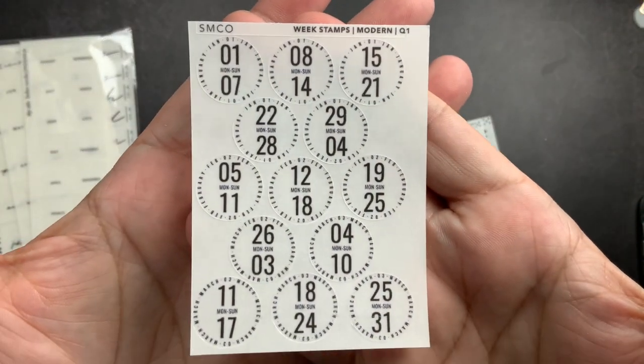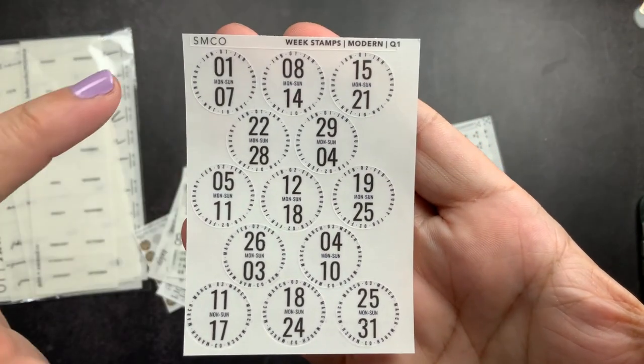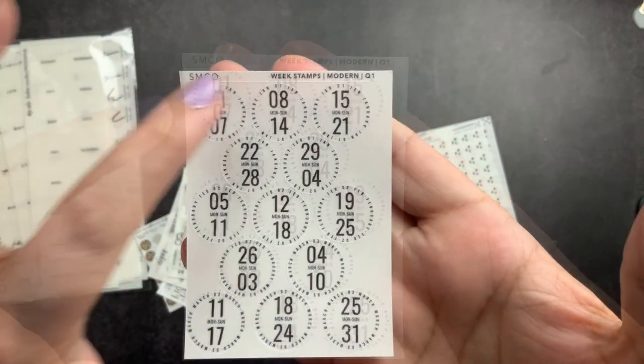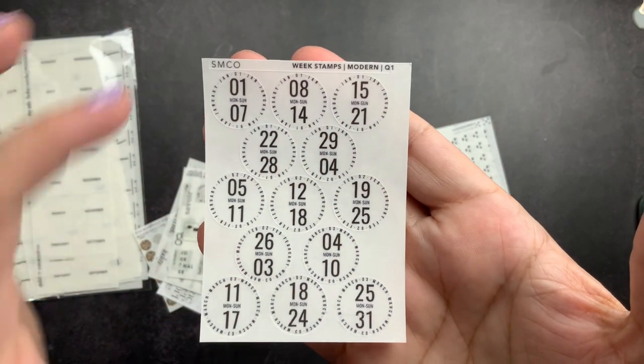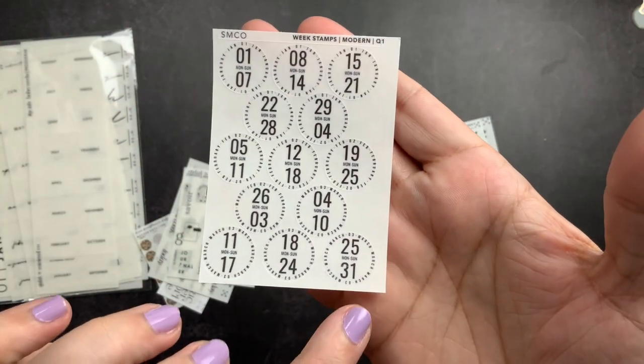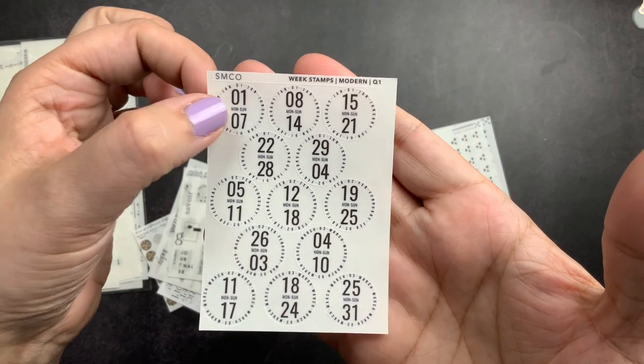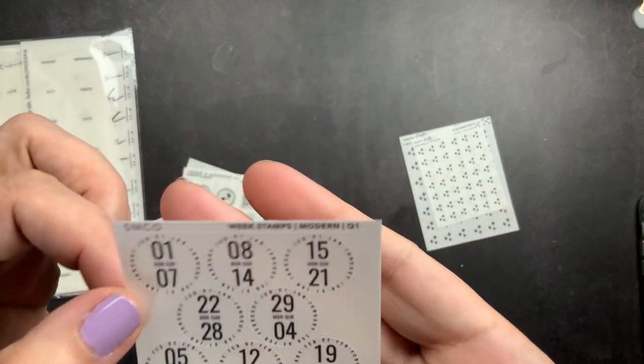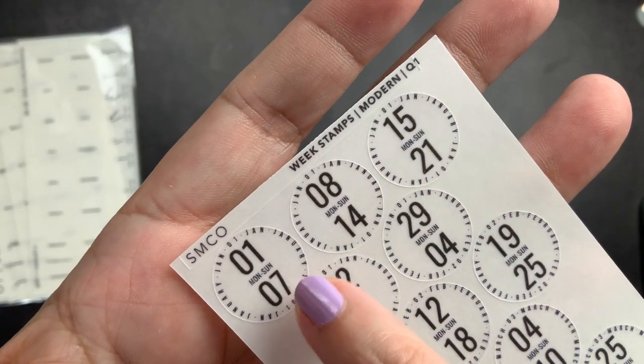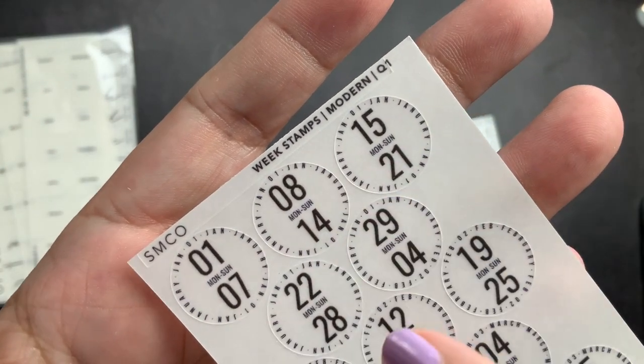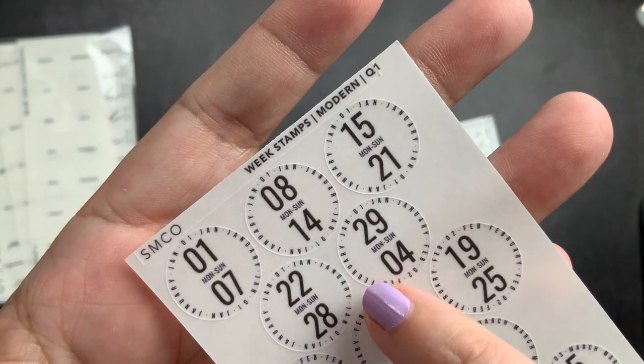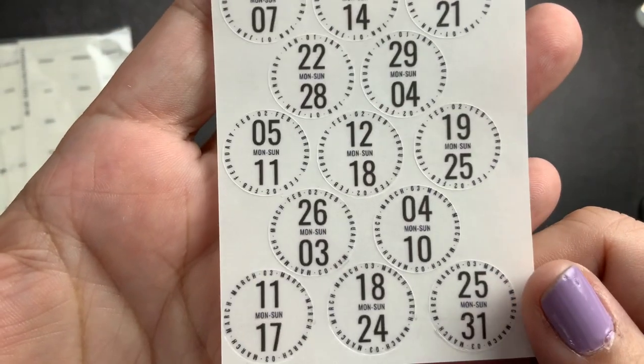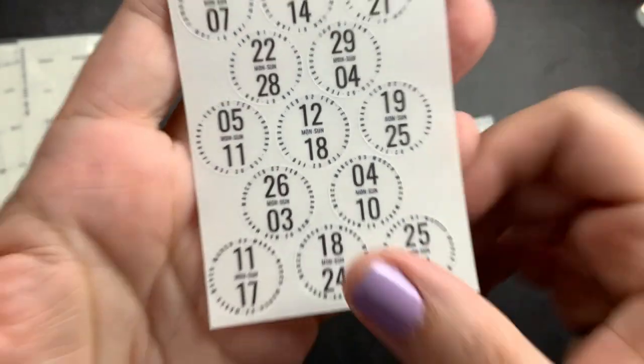Then I have this weekly stamp sticker sheet. So this is for Q1, so your weekly stickers for all the weeks of Q1, from January 1st all the way to March 31st. And so this is week one, this is week two, week three, week four and so on. And then around the edge, it's kind of hard to see, this one says January, January, January. Then this one says January and February, February and March. So the month is written around the edge. It's just really, really tiny.